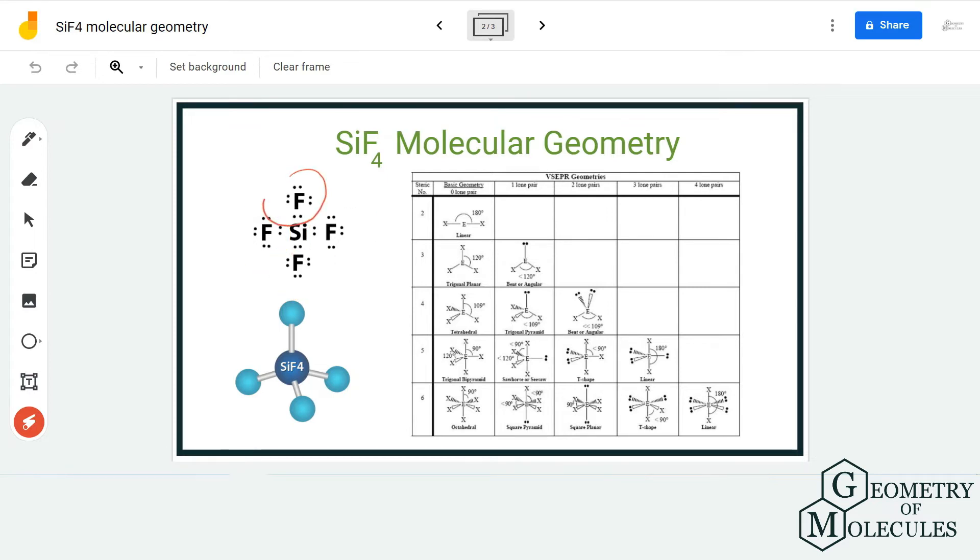To avoid any repulsive forces between bonding pairs of electrons, according to VSEPR theory, all these atoms will be arranged at an equal distance from each other. The arrangement of these atoms will be symmetrical.